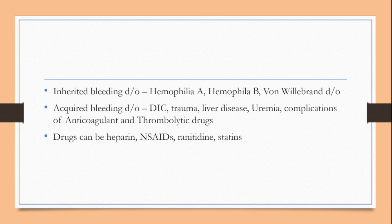Acquired bleeding disorders include DIC (disseminated intravascular coagulation), trauma (where clotting factors are used up with dilution, hypothermia, and acidosis), liver diseases (affecting vitamin K-dependent clotting factor production), uremia (affecting Von Willebrand factor function), and drugs — anticoagulants, thrombolytics, NSAIDs, ranitidine, statins, etc.